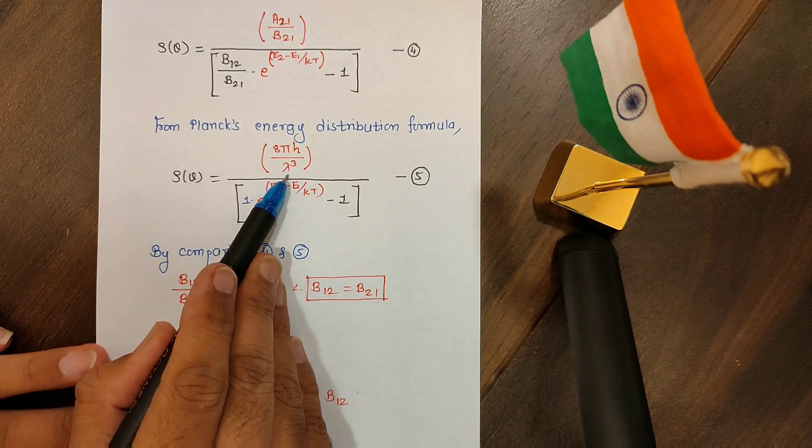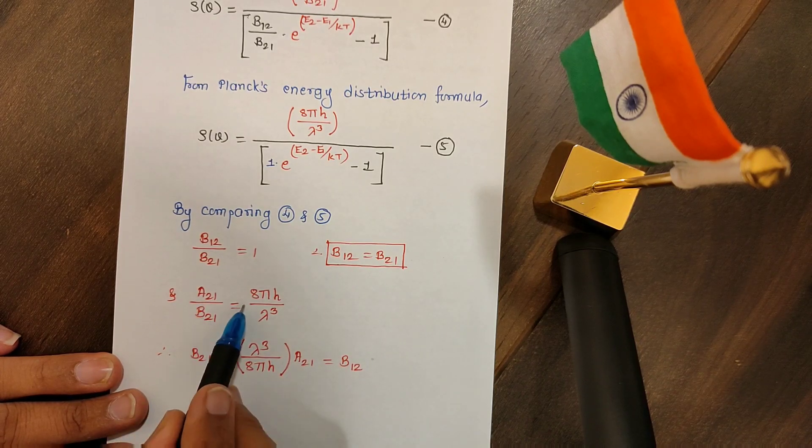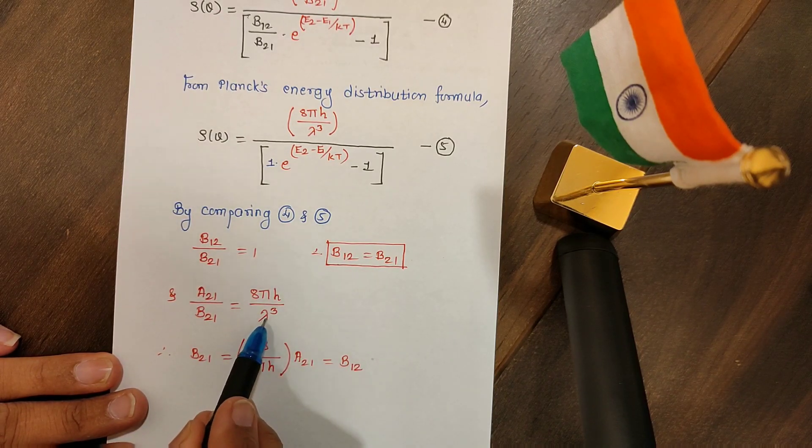Same way, if I compare the numerator, a21 over b21 can be replaced by 8 pi h over lambda cubed. So therefore we will have a21 over b21 equals 8 pi h over lambda cubed.